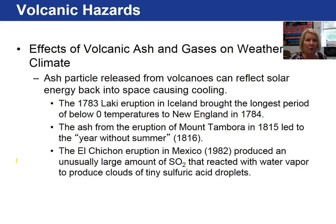Large volcanic eruptions can actually change the climate. When you inject ash and gases into the atmosphere, it reflects solar energy back into space and can cause cooling. The 1783 Laki eruption in Iceland affected the weather. Mount Tambora led to a 'year without summer' in 1816. El Chichón in Mexico in 1982 produced huge amounts of sulfur dioxide that combined with water vapor to produce sulfuric acid droplets.